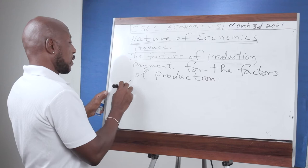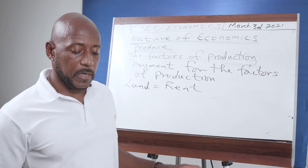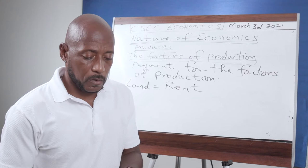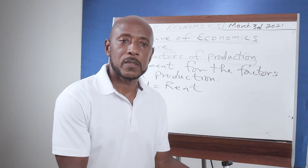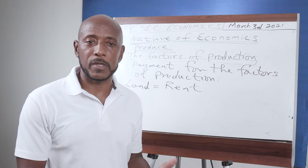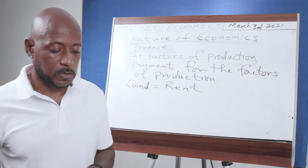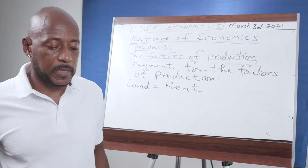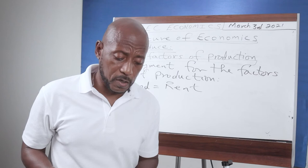For land, the payment is referred to as rent. The reward for land is called rent. Rental income comes from the ownership of property. If you own an apartment and somebody wants to stay in it, you rent it to them — they're paying you to use your property. If you have a piece of land that somebody is farming, they pay to use it. The payment for land is referred to as rent, and it is paid by the tenants of the land resources.